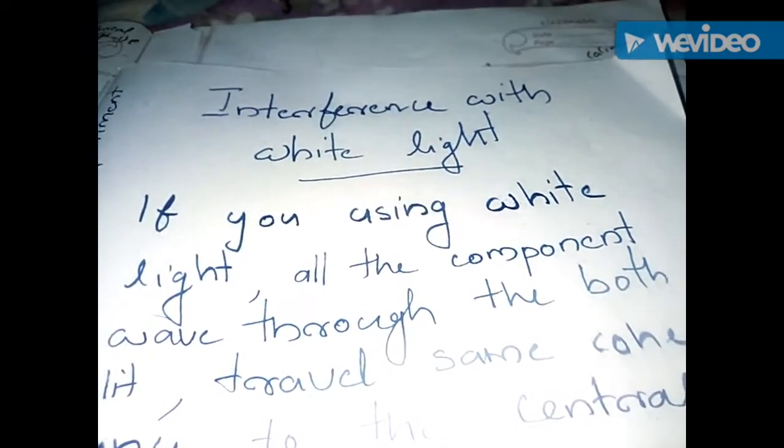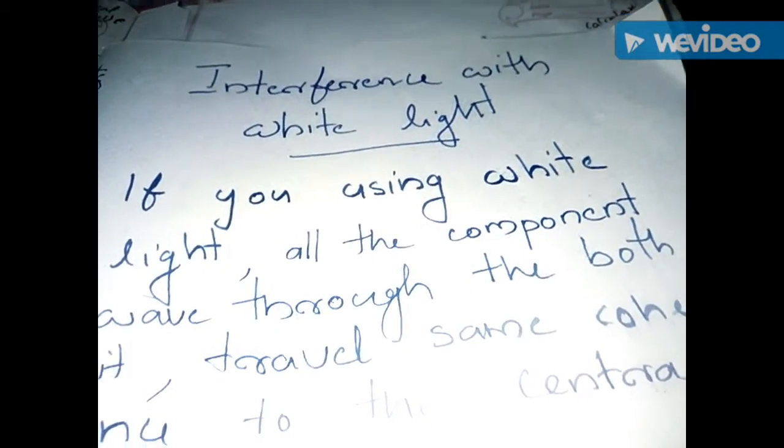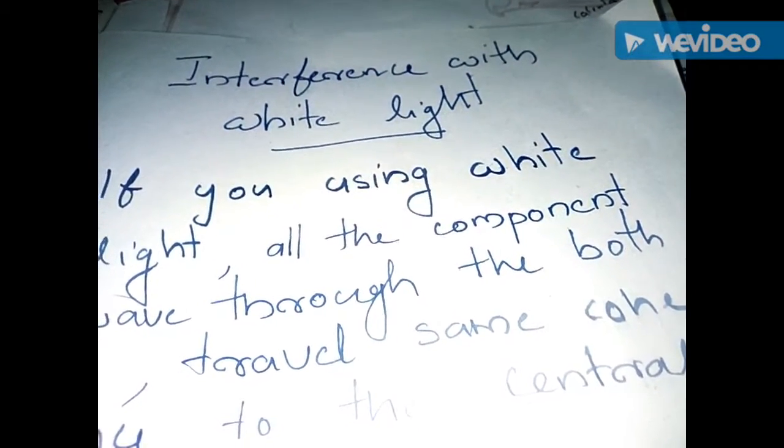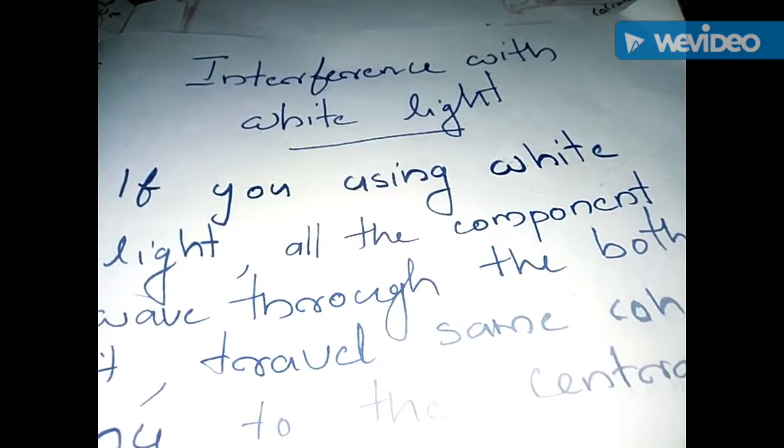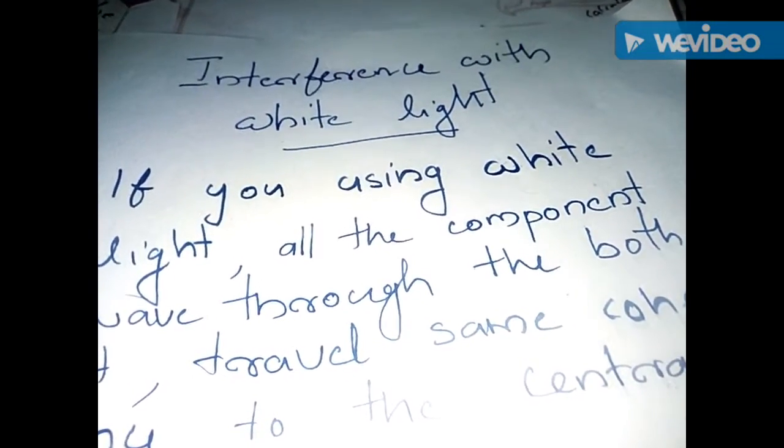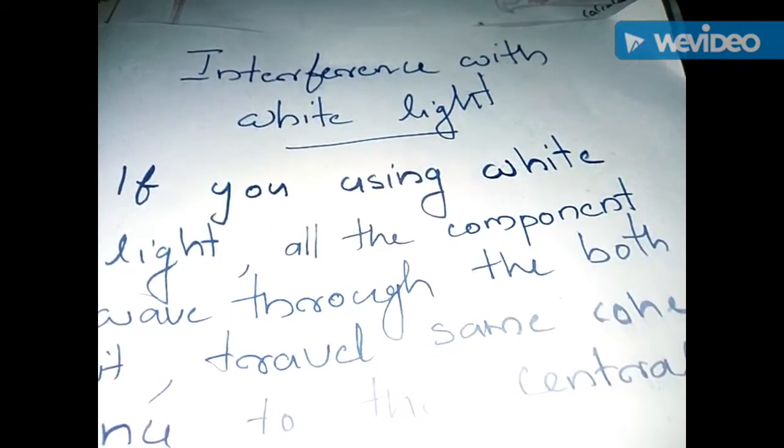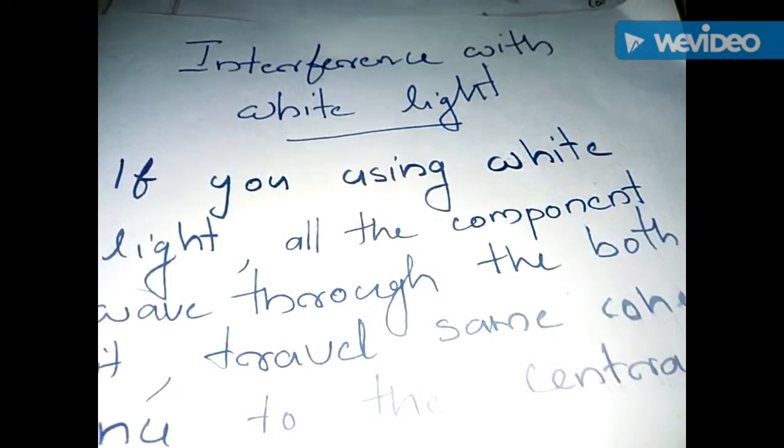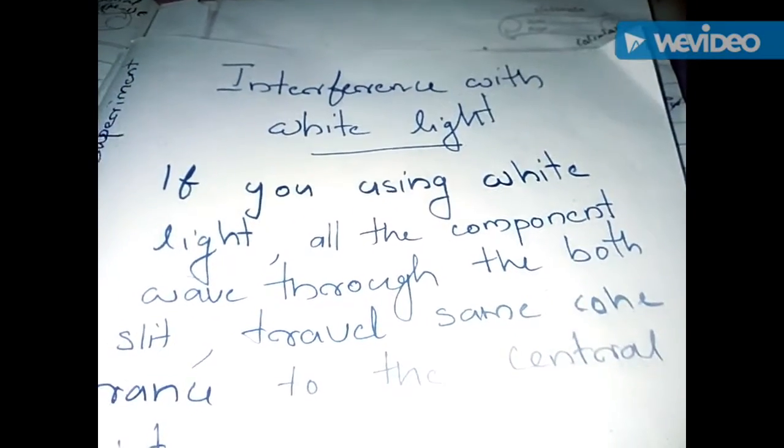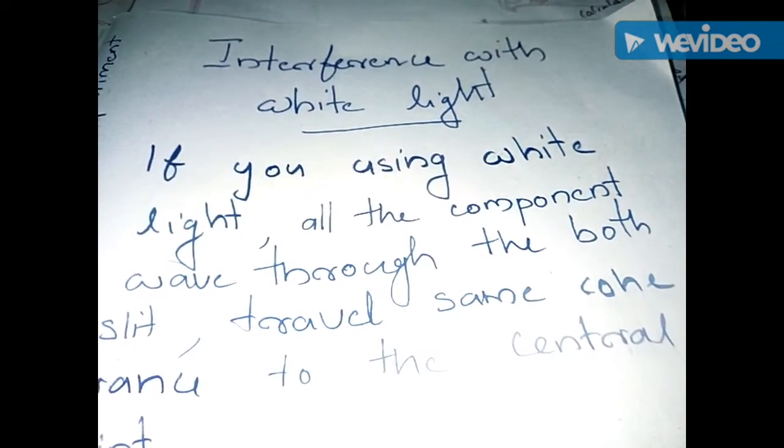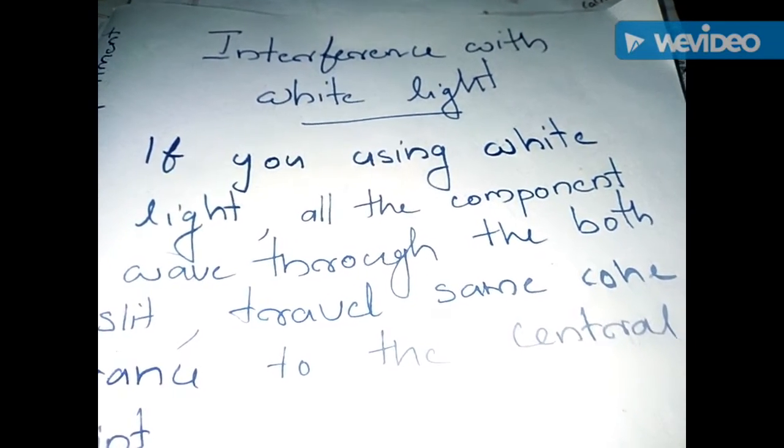Dear friends, in the case of Young's double slit experiment, if you're using white light, all the component waves through both slits travel with the same coherence to the central point.